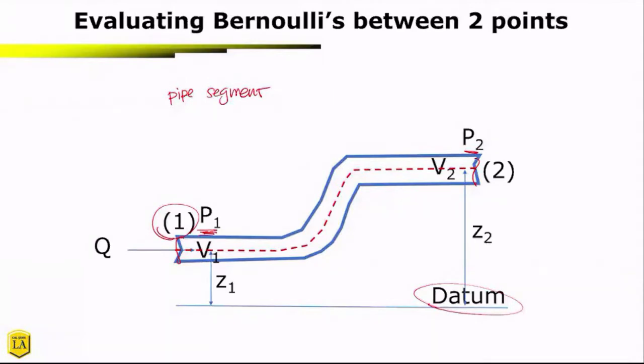Now the Bernoulli equation essentially tells us that the total energy in the system is constant as you move from one to two. So if we were to write this as an equation, it would say that P1 over gamma plus V1 squared over 2G plus Z1 is equal to P2 over gamma plus V2 squared over 2G plus Z2. So this is the Bernoulli equation.